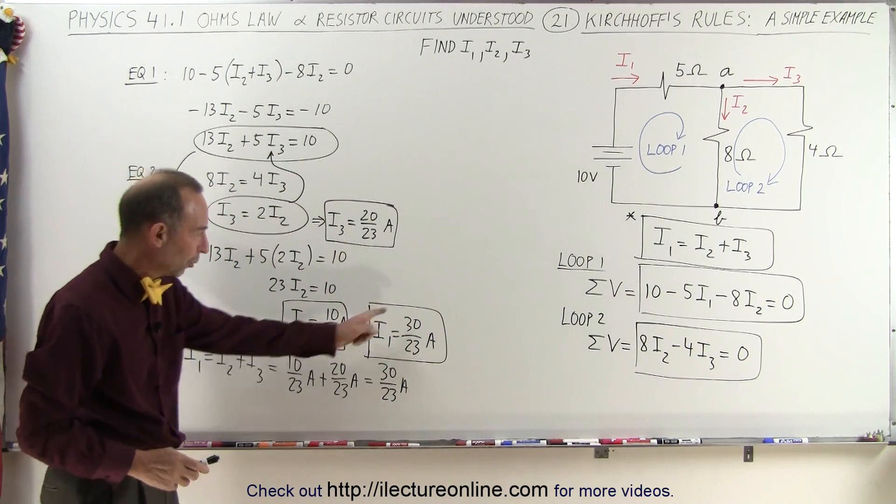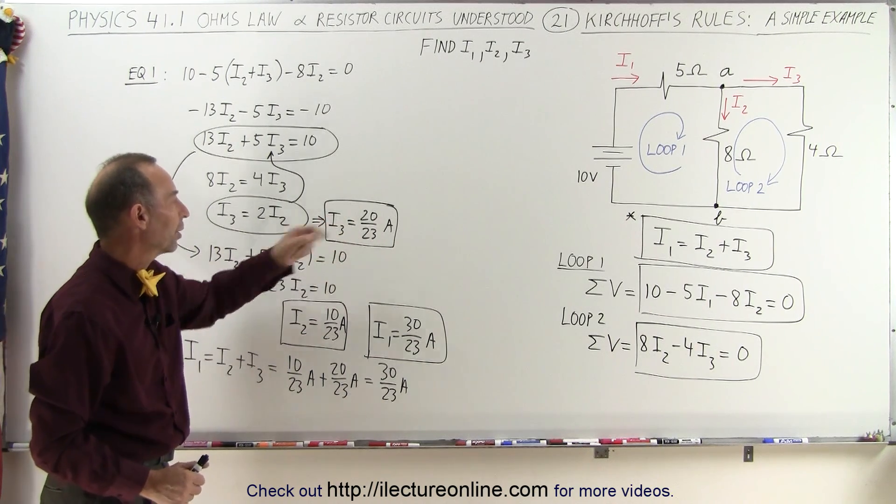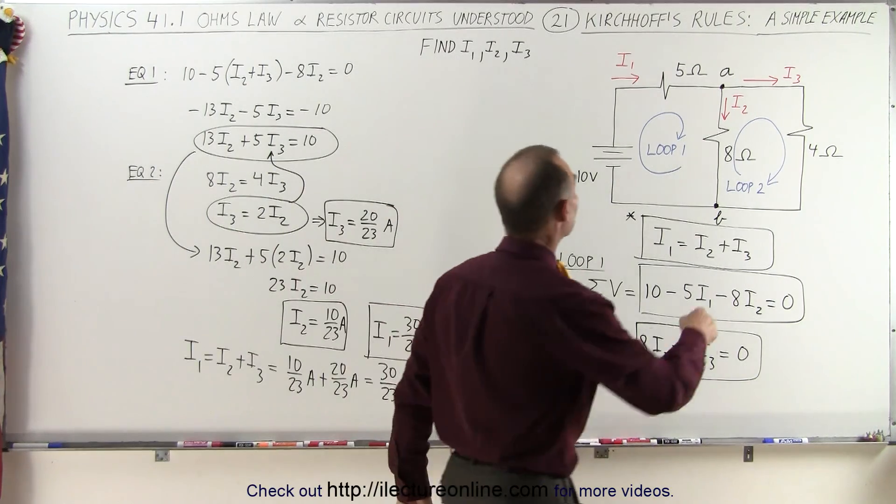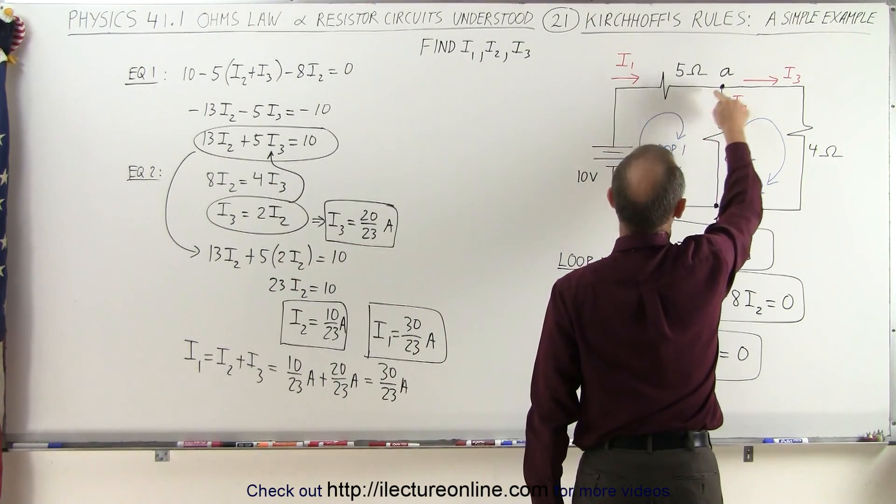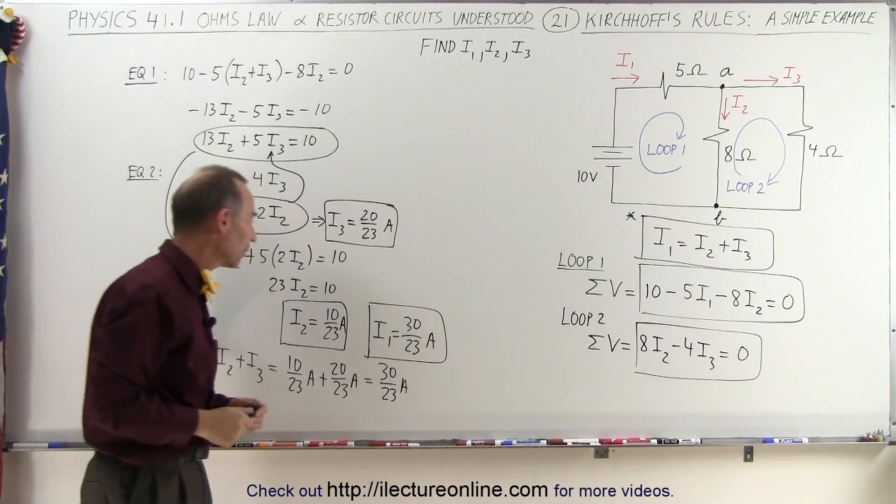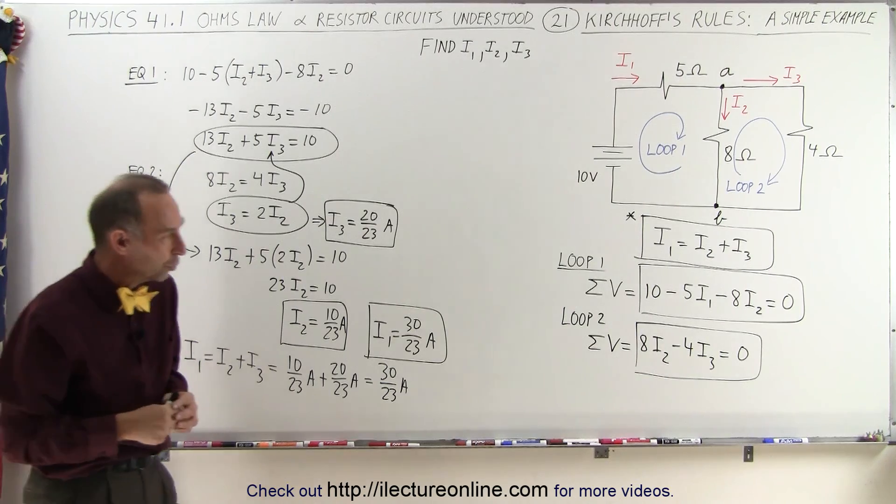And so now I've successfully determined the current in each of the three branches. I1 is 30 over 23 amps, I2 is 10 over 23 amps, and I3 is 20 over 23 amps. And it's always a good check to make sure that when you go back here, that the current I1 is equal to the sum of the two currents I2 and I3. And I think we have achieved that.